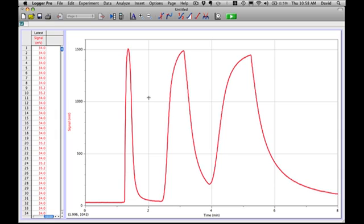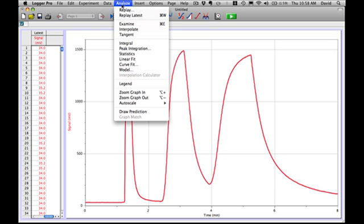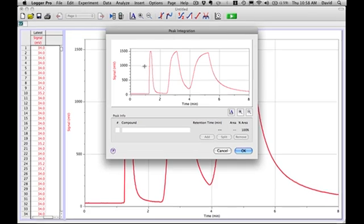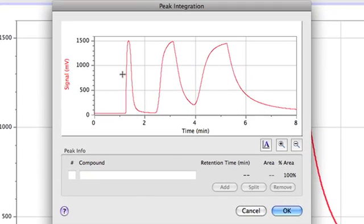Now for analysis, there is a feature in Logger Pro software that's new under the analyze menu that's called peak integration. When I select peak integration, I get a small dialog box with an active graph and I can select each one of these peaks, one at a time to analyze.